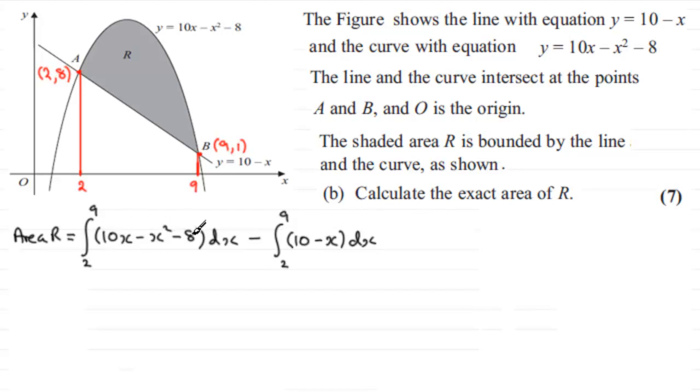Right, now you could merge these two integrals together. You could say 10x - x² - 8 minus 10 + x, all integrated between 2 to 9. But I'm going to opt for a different method here. Okay, you can do this, it's up to you, but what I'm going to do is integrate this one, but we'll talk about this integral in a moment.